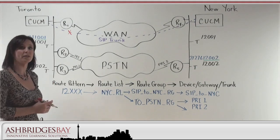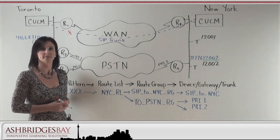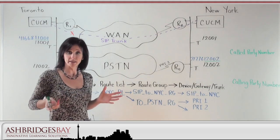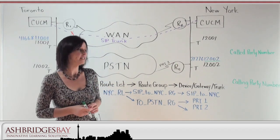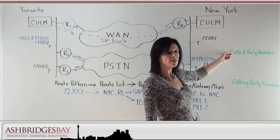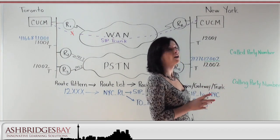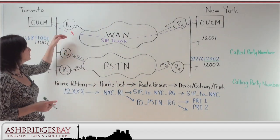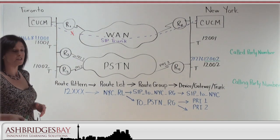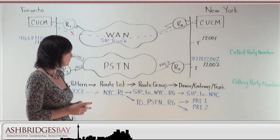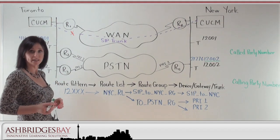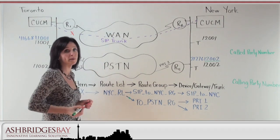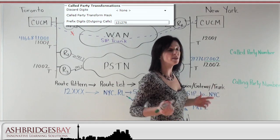So we're going to fix that in our dial plan hierarchy by using digit manipulation. We use digit manipulation to change the number — there are two numbers we're going to change: the called party number and the calling party number. Let's look at the called party number first. We dialed 12001 and in our example the WAN has failed. The call manager is going to send that out to the PSTN route group. But we know that when 12001 gets to the PSTN it's unrecognizable. So we're going to have to change that in our route list before it gets to the PSTN, and we're going to do that using a prefix.